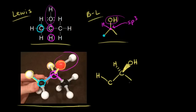What about the other two hydrogens? This hydrogen is coming out at us in space, so we represent that with a wedge and draw in the hydrogen - the bond is in front of the paper, coming towards us in space. And then there's another hydrogen bonded to the carbon in blue that is going away from us in space.